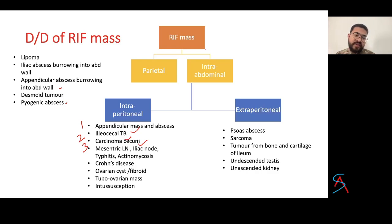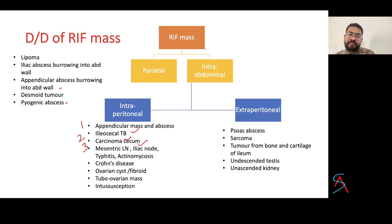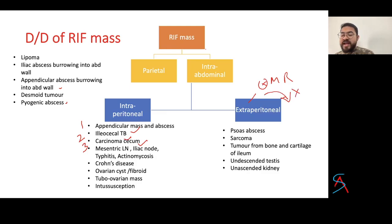For extraperitoneal causes, it could be psoas abscess, sarcoma, undescended testes in males, unascended kidney, or tumor of bone and cartilage. The three most common right iliac fossa masses are appendicular mass (most common), ileocecal TB, and carcinoma cecum. We will discuss these three in detail. Remember that retroperitoneal masses do not move with respiration and do not fall forward in the exaggerated lateral position, as discussed in the gastric carcinoma video.